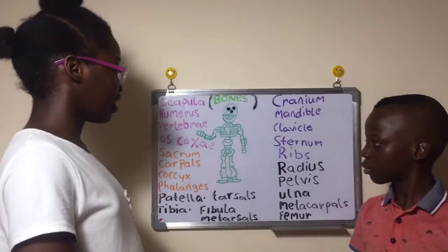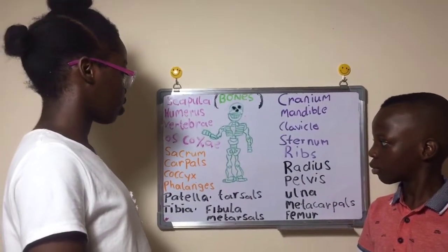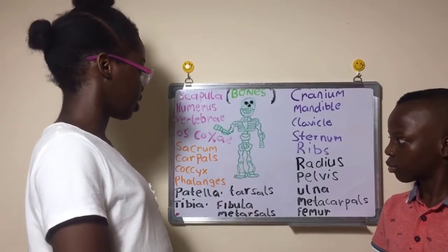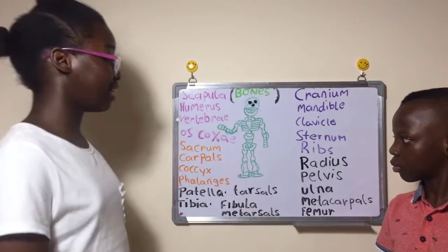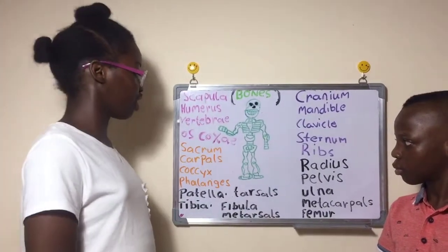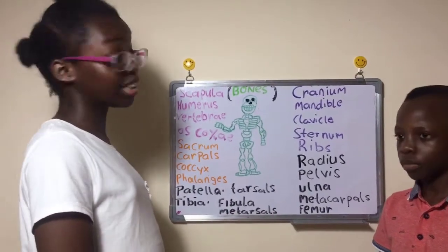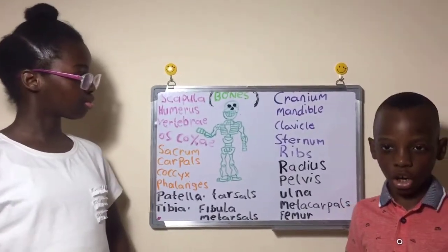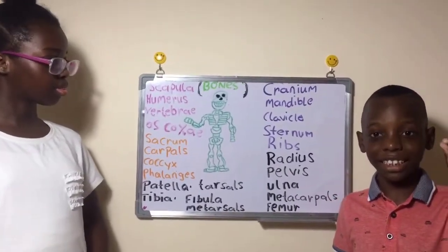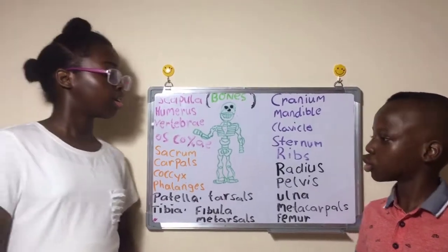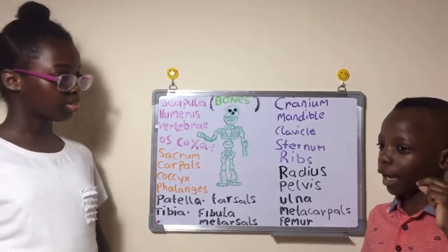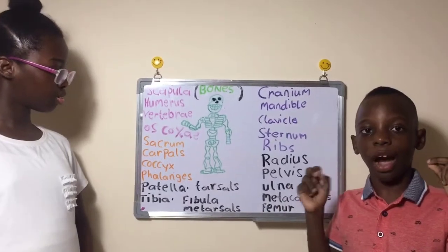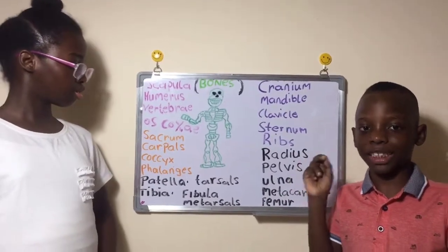There's the pelvis, which holds the kidneys and many other parts of the urinary system. It also has an odd-looking shape. And with the ribcage — both of them have odd-looking shapes.